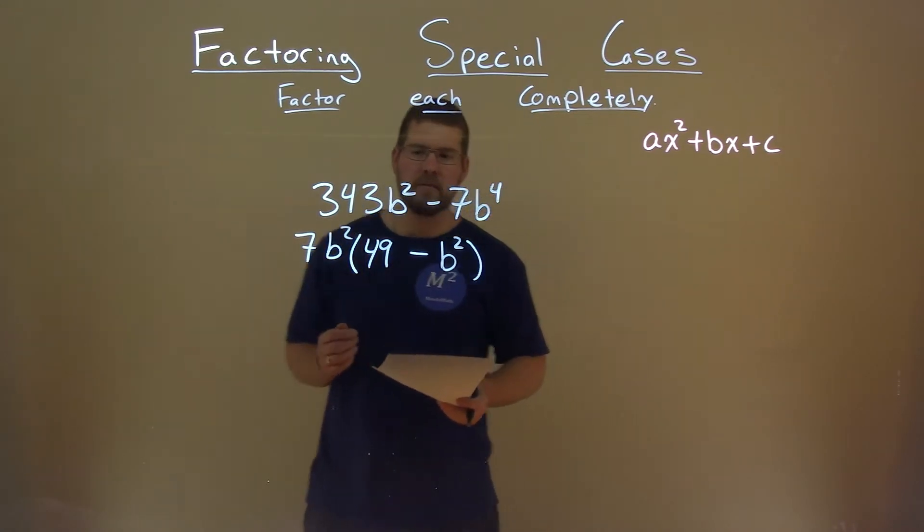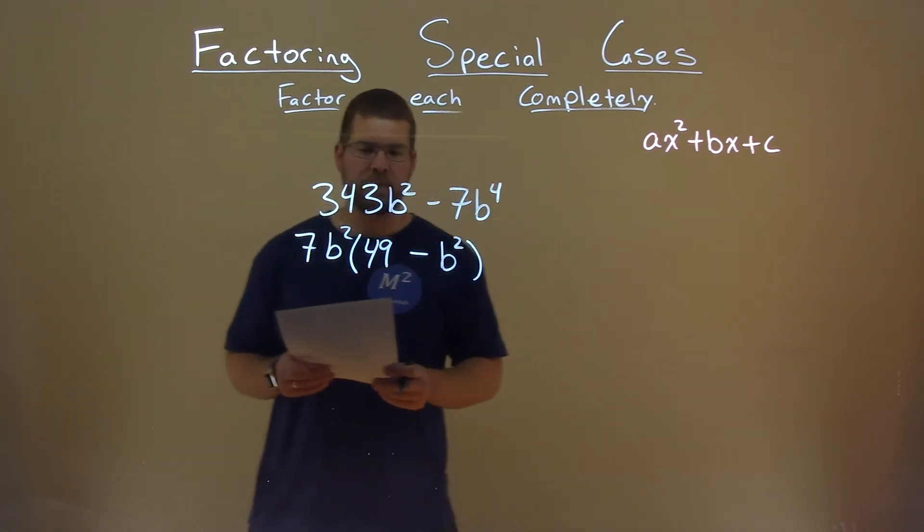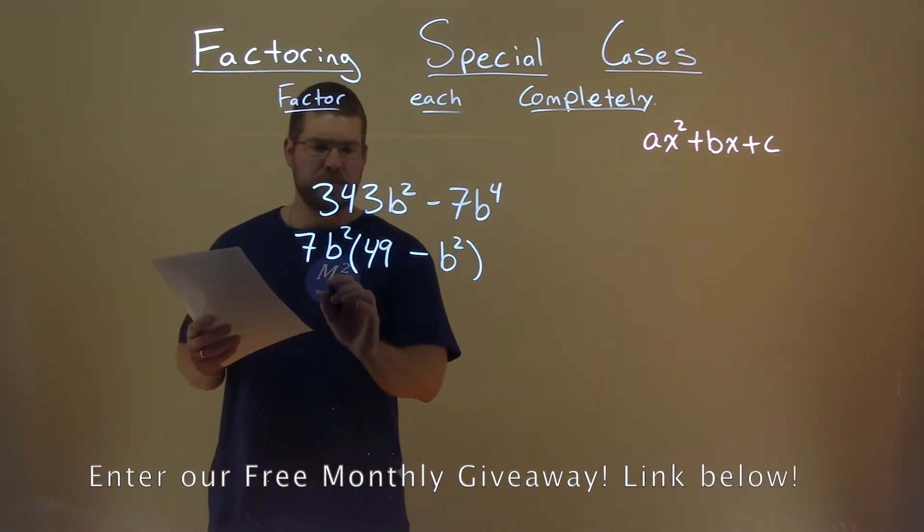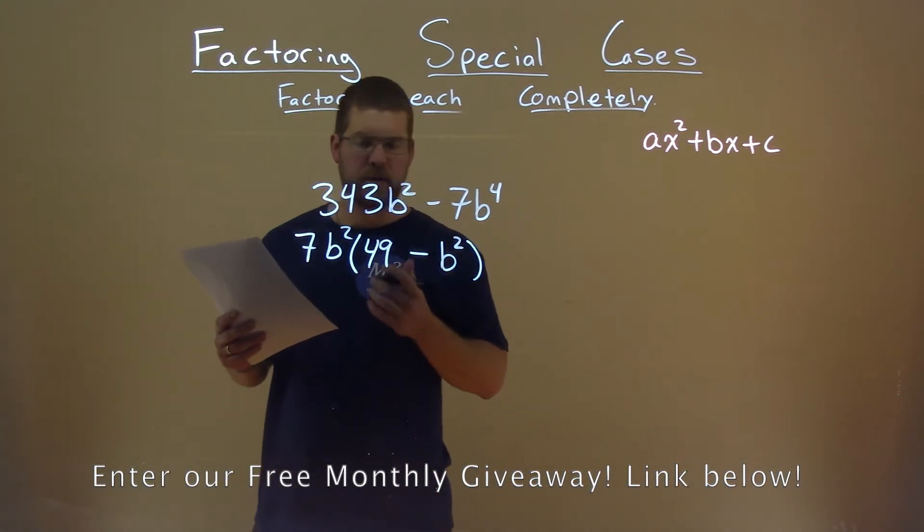So now a problem that looked pretty difficult isn't so bad. So let's look at the inside here. Well, 49 and b squared are both perfect squares.